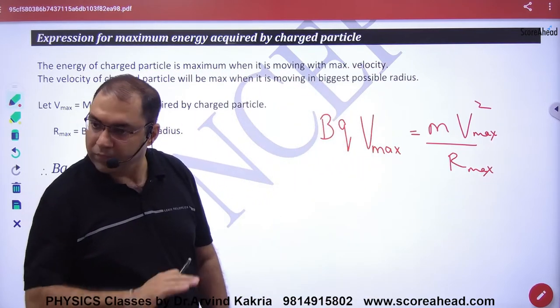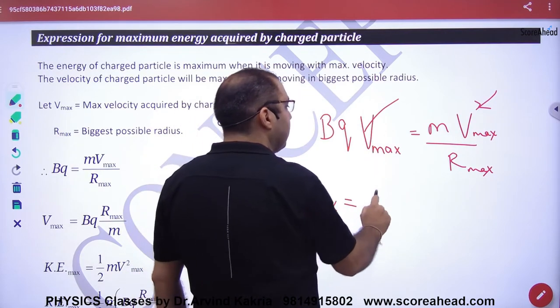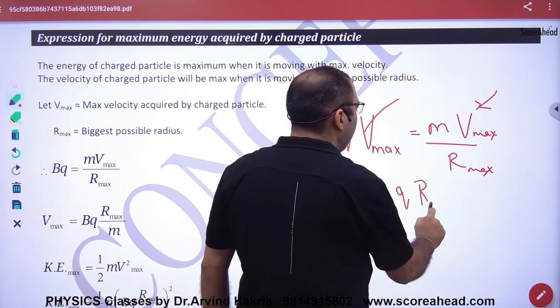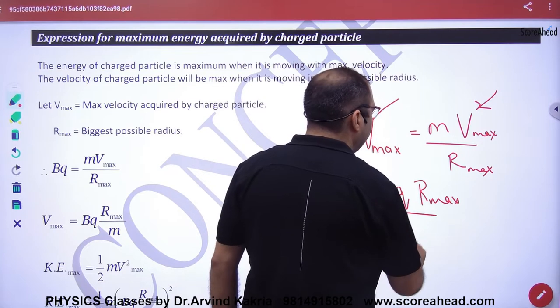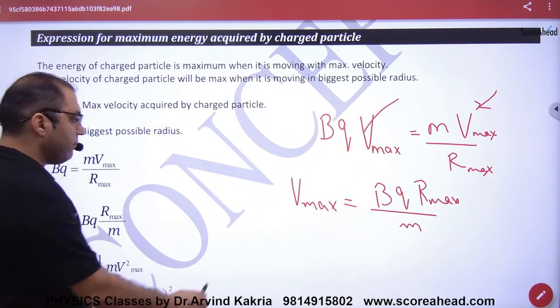From this rule, vmax can be calculated. So vmax value will be Bq Rmax divided by mass m. So maximum kinetic energy, maximum kinetic energy...